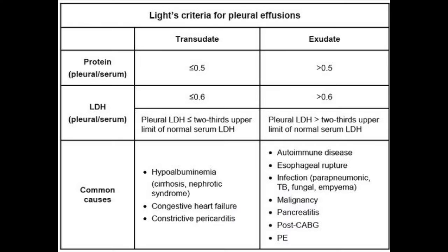Next is Light's criteria for pleural effusion, which helps you differentiate exudate versus transudate. The two things you look at are protein and LDH, compared from the pleural fluid to serum. If the pleural fluid to serum protein ratio is greater than 0.5, that is exudative. If the LDH ratio is greater than 0.6, that's also exudative. There's a third criterion — LDH greater than two-thirds of the upper limit of serum LDH — but in practice you can usually just calculate the ratio directly from the values given.